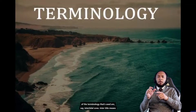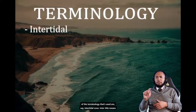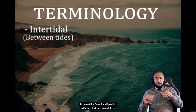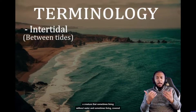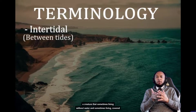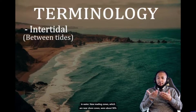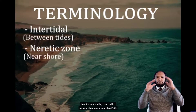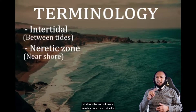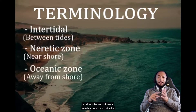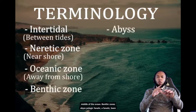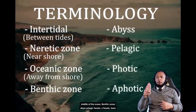Some of the terminology that's used includes the intertidal zone — intertidal means between tides, where a creature might sometimes live without water and sometimes be covered in water. Neuritic zones are near-shore zones where about 90% of all fish are caught. Oceanic zones are away from shore, out in the middle of the ocean. Then there are benthic zones, abyss, pelagic, photic, and aphotic zones.